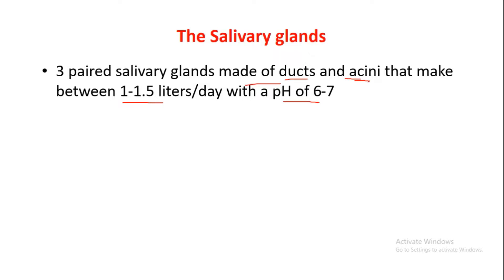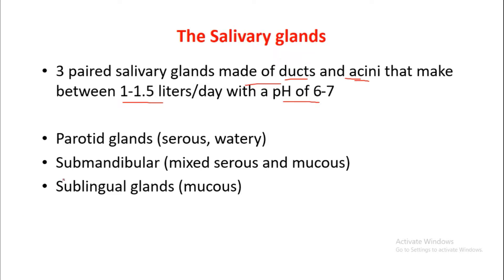There are three salivary glands: the parotid gland, submandibular gland, and sublingual gland. Parotid gland secretions are mostly serous and watery in nature; submandibular secretions are serous and mucus in nature; sublingual gland secretions are majorly mucus in nature.